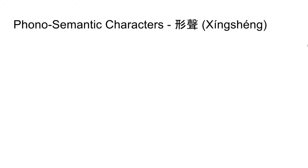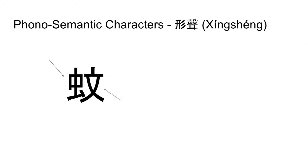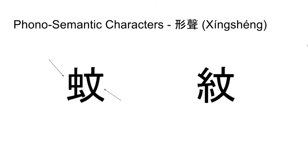A good example of this is Wen, the character for mosquito. On the left side of the character is the radical, the pictograph for insect, Chong. The component on the right originally meant tattoo, but it does not contribute any meaning. Instead, it remains only to provide us with the pronunciation, Wen. Another character formed this way represents the idea of a stripe. Its phonetic component is also Wen, which once again provides no meaning. The actual meaning is in the radical to the left, which historically means thread — the same sort of long thin thing which a stripe is.